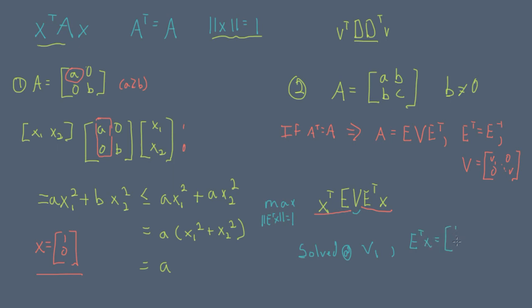If we assume that the largest diagonal value of V occurs in the first column, then our quadratic form is going to be maximized at E transpose X equals 1, 0, 0, 0, which is equivalent to the first column of E.